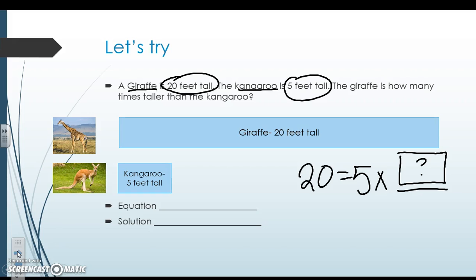So here our equation is 20 times five, or sorry, 20 equals five times, well, what would go here? Four. So the solution is, it is four times taller, or the giraffe is four times taller than the kangaroo.